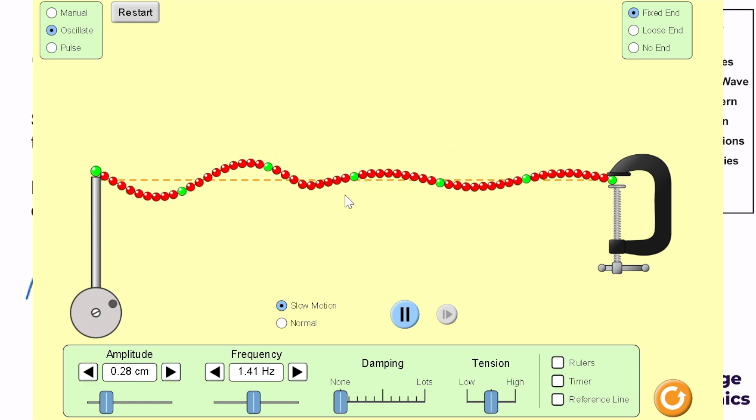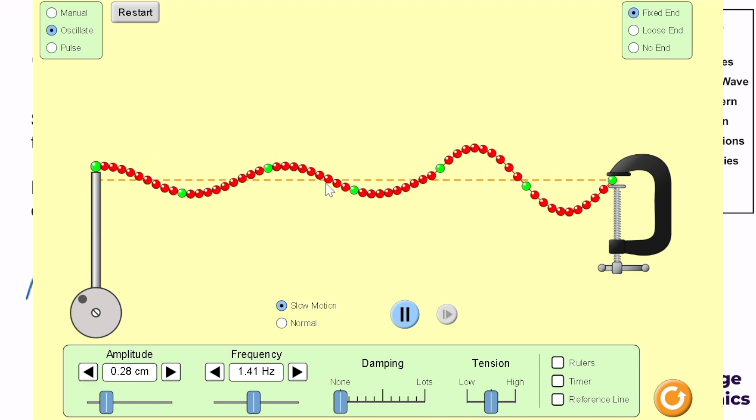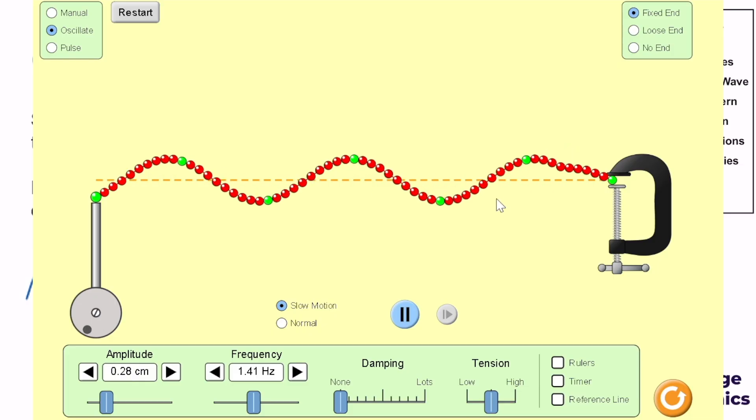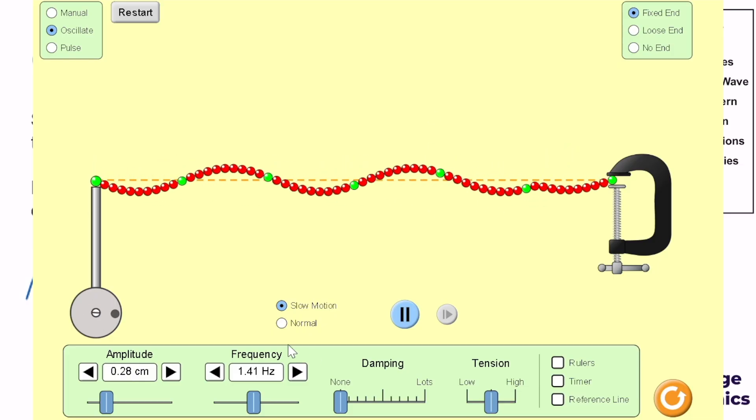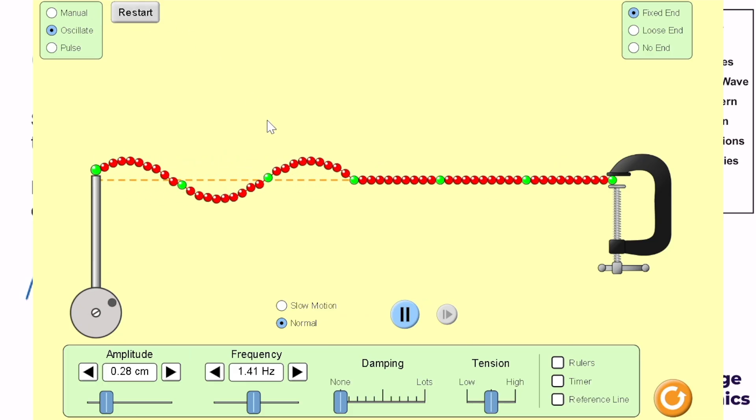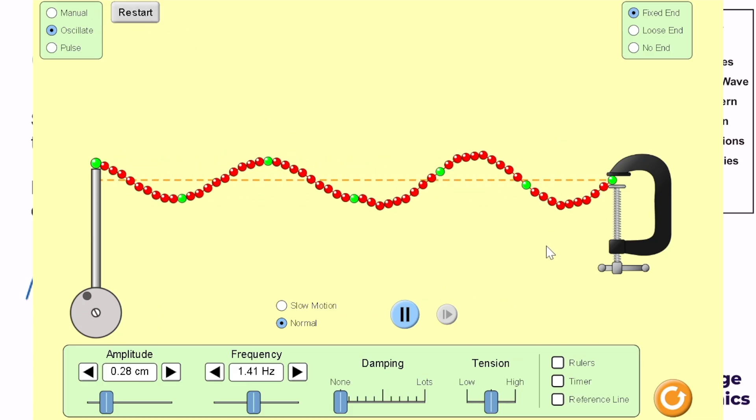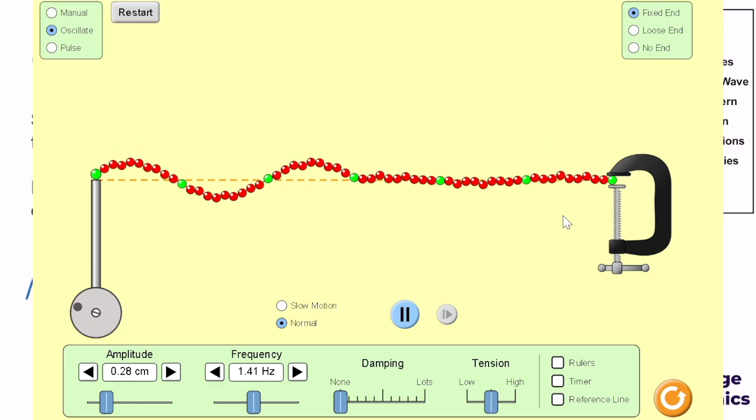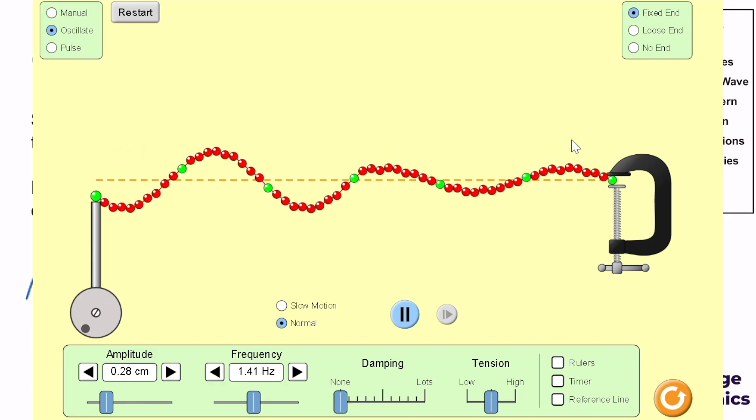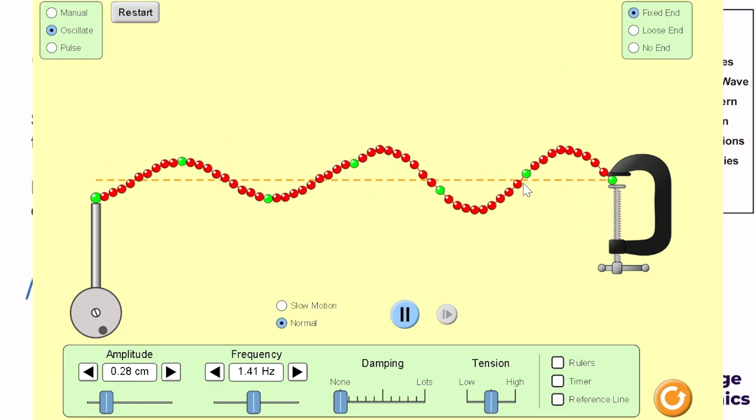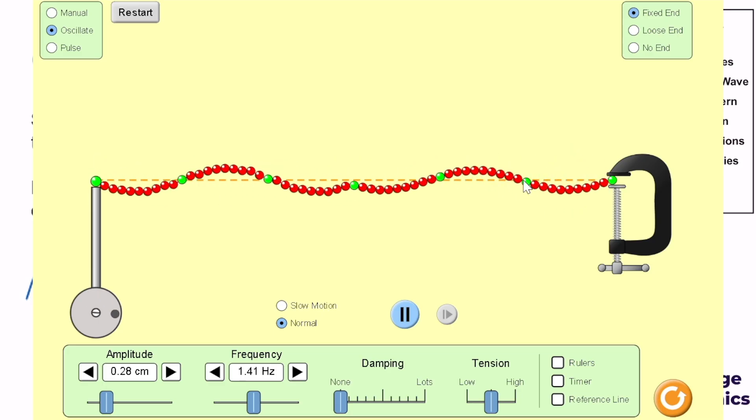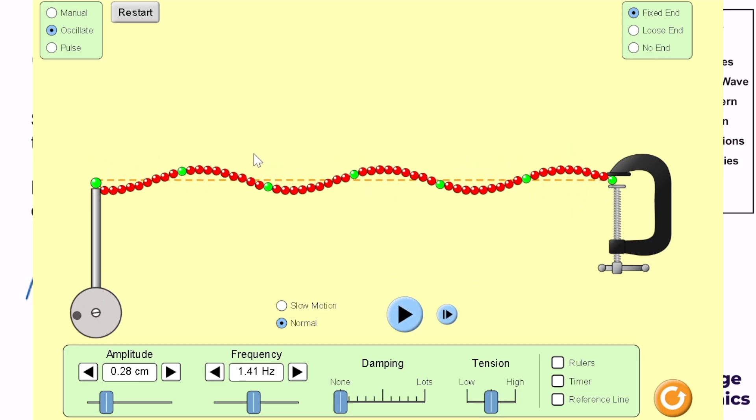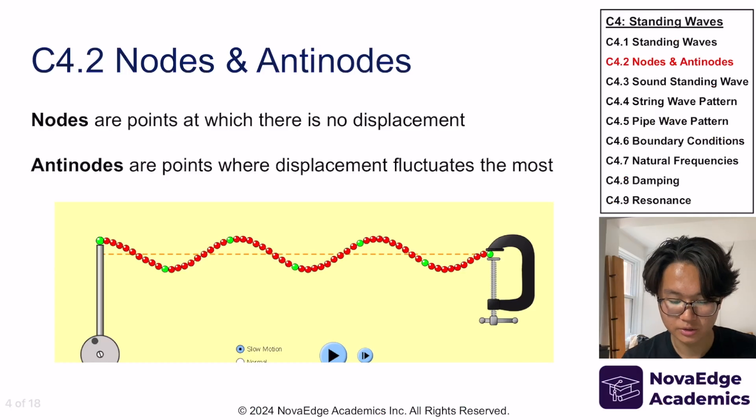Now, as you notice, there are actually some parts where they don't displace at all. And there are some parts where it fluctuates all the time. If I make this in a normal speed, then probably it will be much clearer that this guy, for example, is just bouncing back and forth, bouncing back and forth. This guy is not moving here. Now, these two types of points, we call them nodes and antinodes. So I'm going to talk more about those.